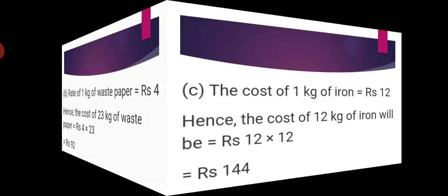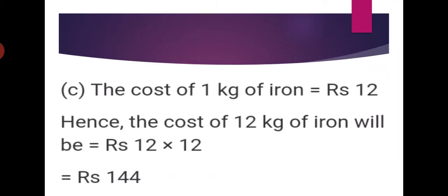Then do the third question, question C: 12 kg of iron. The cost of 1 kg of iron — check it from the rate list — is rupees 12. The cost of 1 kg of iron is equal to rupees 12, so the cost of 12 kg of iron will be 12 into 12, which is equal to rupees 144.